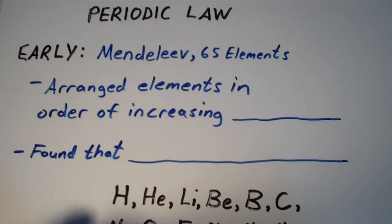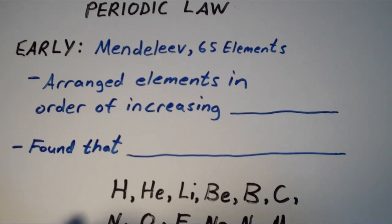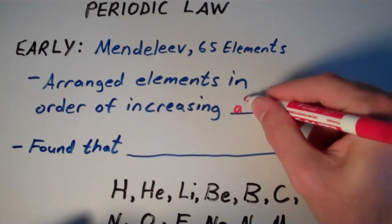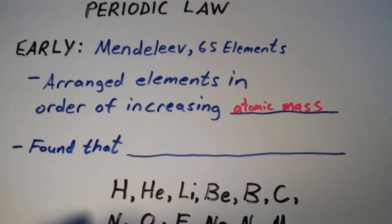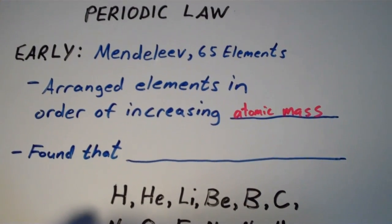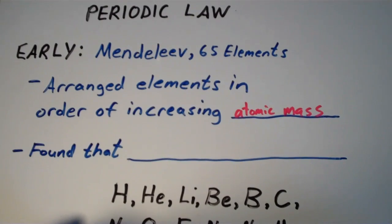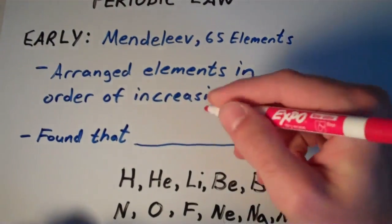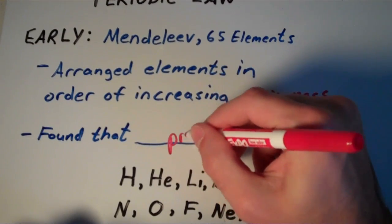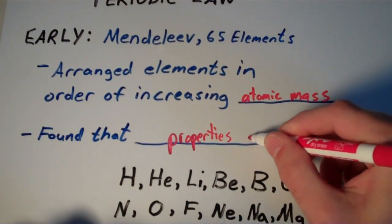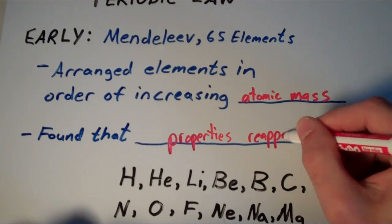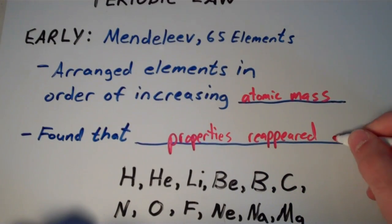What Dmitry Mendeleev did was arrange the known elements in order of increasing atomic mass. When he arranged these elements in order of increasing atomic mass, he found that certain properties reappeared periodically.